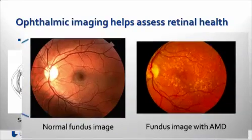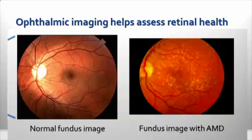On the screen I have an image of what the healthy fundus, or back of the eye, would look like in a subject, as well as on the right-hand side an image where there are indicators of disease — in this case age-related macular degeneration, which is the leading cause of blindness in the United States.